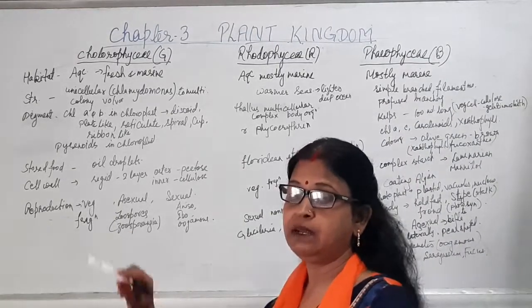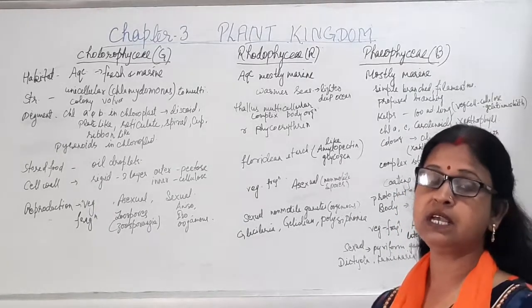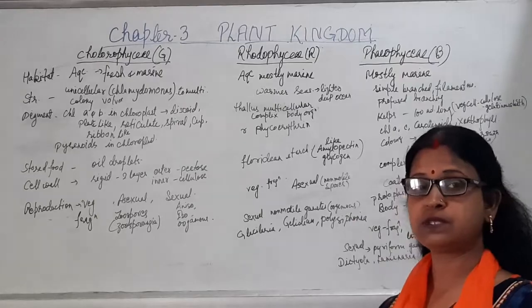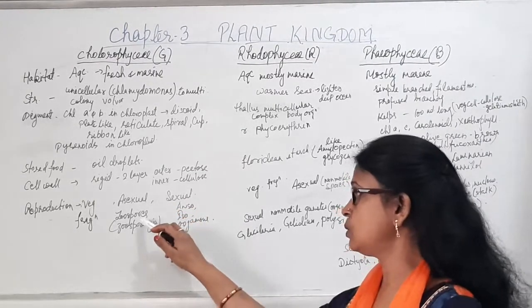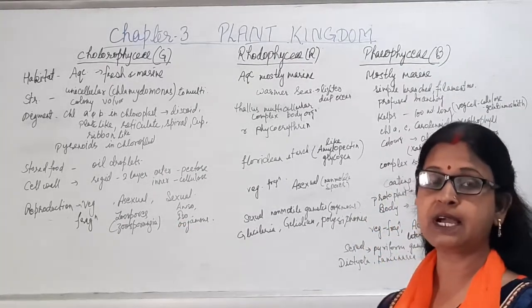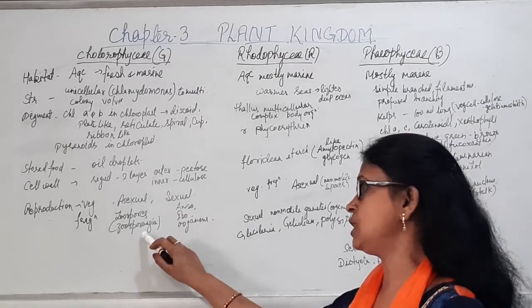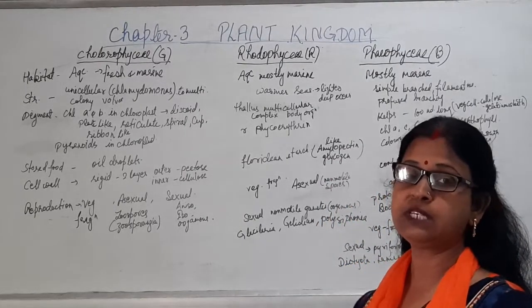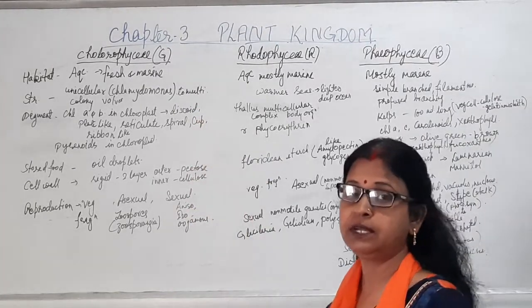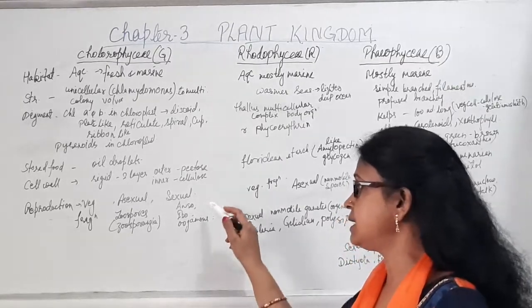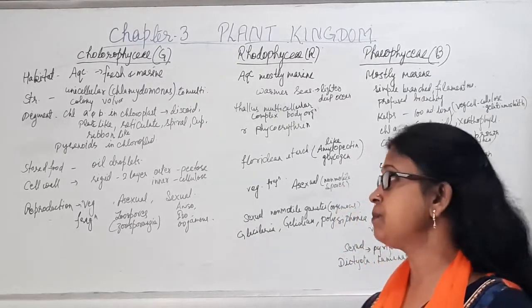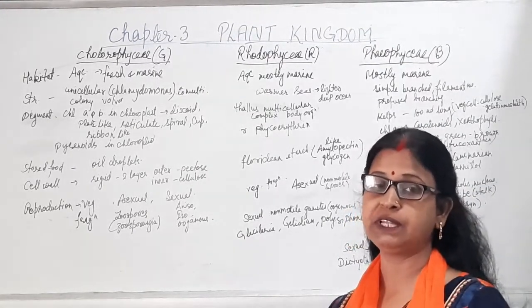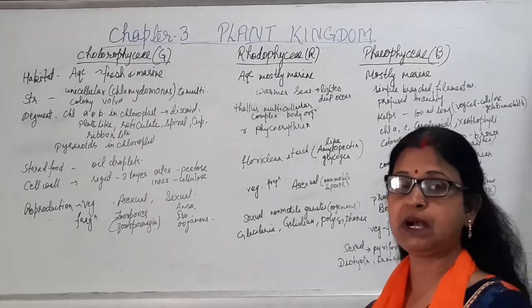Regarding reproduction: all three classes exhibit vegetative, asexual, and sexual reproduction. In Chlorophyceae, vegetative reproduction occurs by fragmentation. Asexual reproduction occurs through motile zoospores formed inside a zoosporangium, which germinate to give rise to a new plant. Sexual reproduction exhibits three types: in some members like Chlamydomonas, isogamy occurs where both gametes are the same type in shape and size.